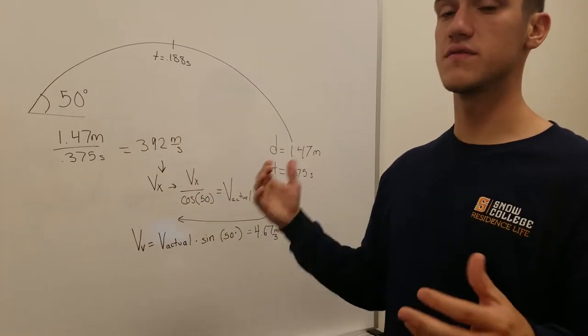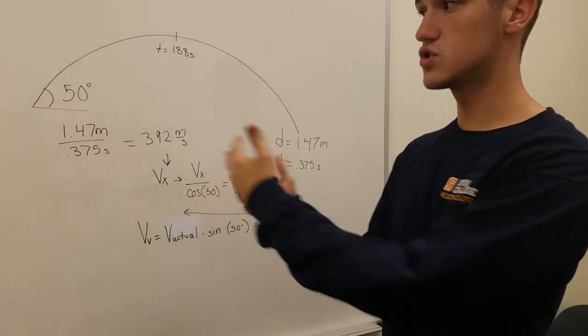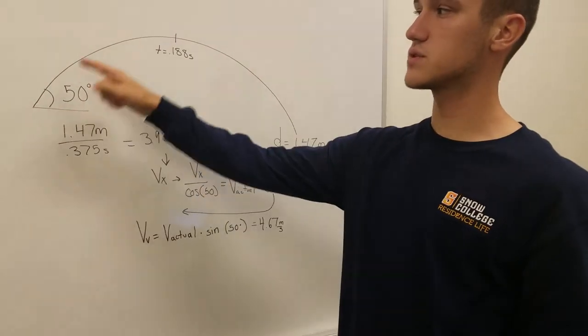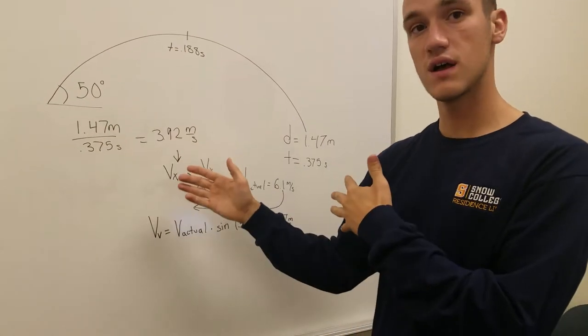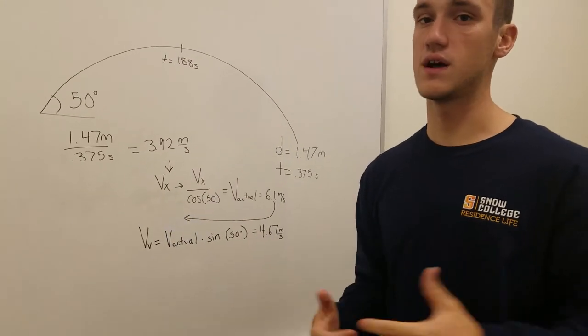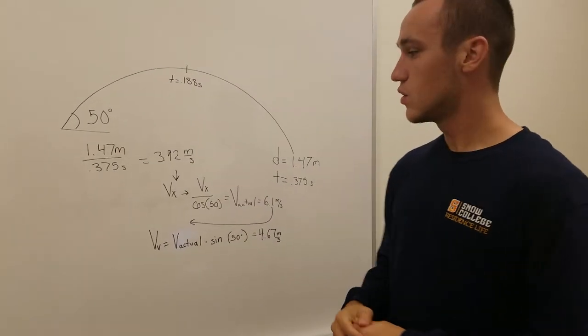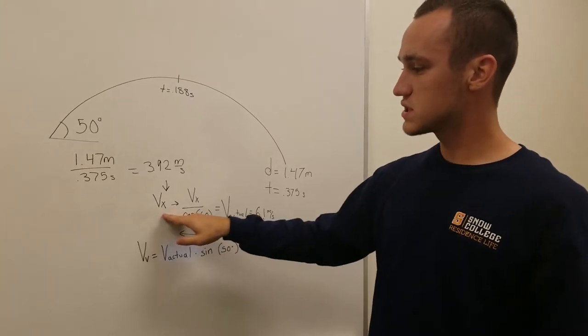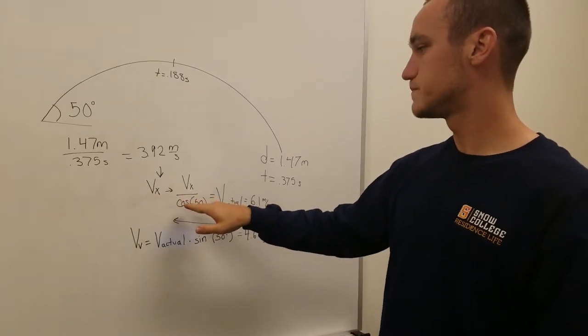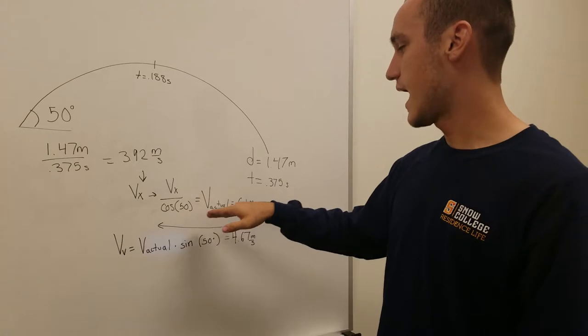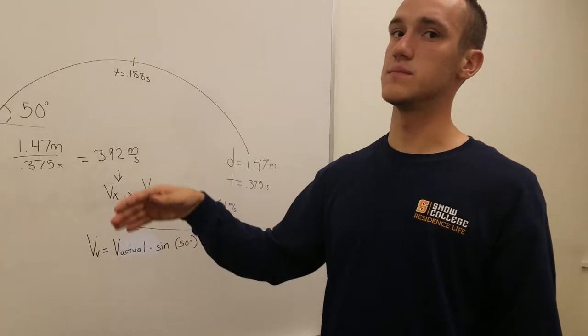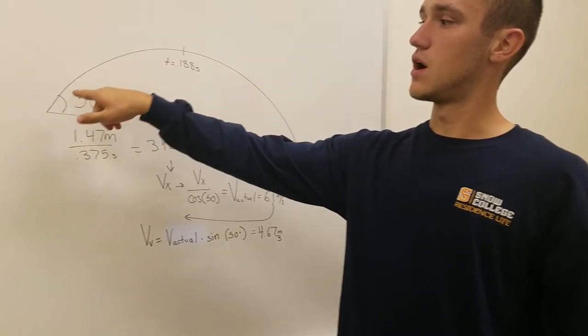That gave us our horizontal velocity. We now needed to use trigonometry to figure out what the actual velocity was because the horizontal velocity is different from the actual velocity. Using our trigonometric functions, we figured that the horizontal velocity was equal to the actual velocity times cosine of 50 degrees.